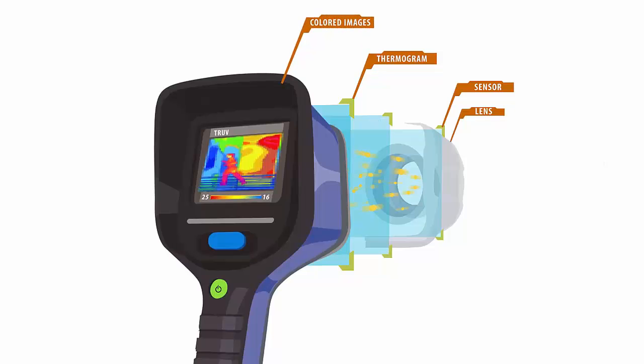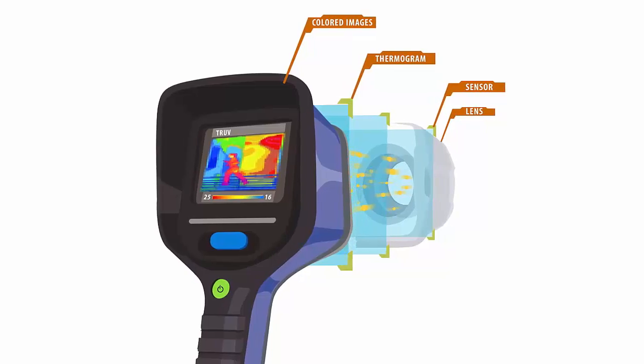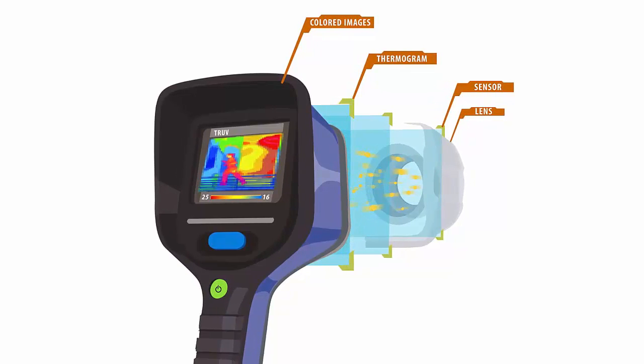The thermogram then transforms into electric impulses which are directed to a signal processing unit that translates the information into data for the visual.